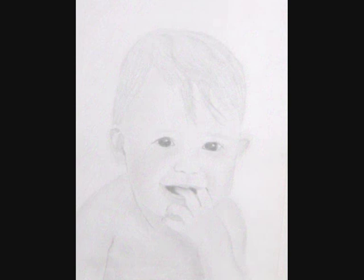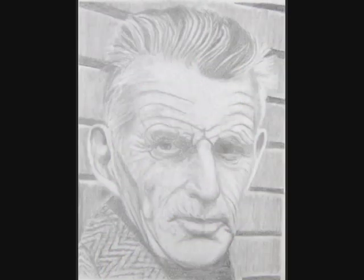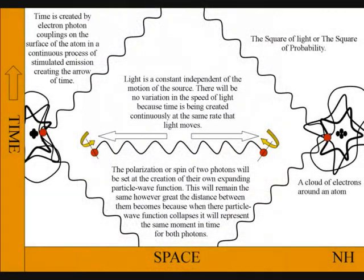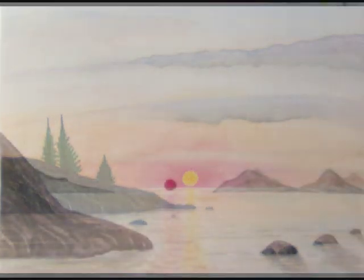Even the individual atoms of the observer are radiating electromagnetic radiation continuously. The observer will feel this as the continuous flow of time and as the aging process. It is because this process is at the same rate that light moves, that the speed of light between the atoms will always be a universal constant, independent of the motion of the source.